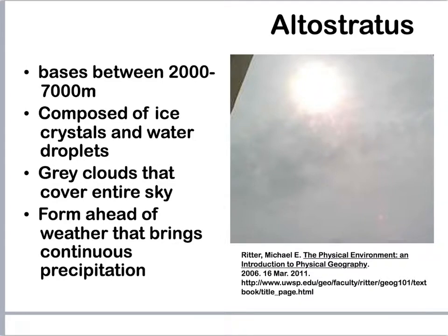Moving up, we have altostratus. They're going to be a little bit higher. These are composed of ice crystals and water droplets — getting to the point where they might be freezing. These are gray clouds that again are going to cover the whole sky. You'll find altostratus clouds right ahead of weather that's going to bring continual, all-day precipitation.